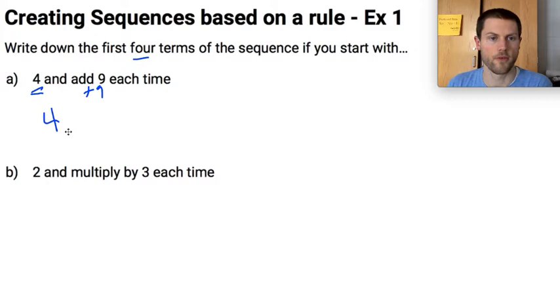So our first member would be 4, first term would be 4, then we'd add 9, so 13, and then we'd add 9, so 22, and then we'd add 9, so that's 31. That's 1, 2, 3, 4.